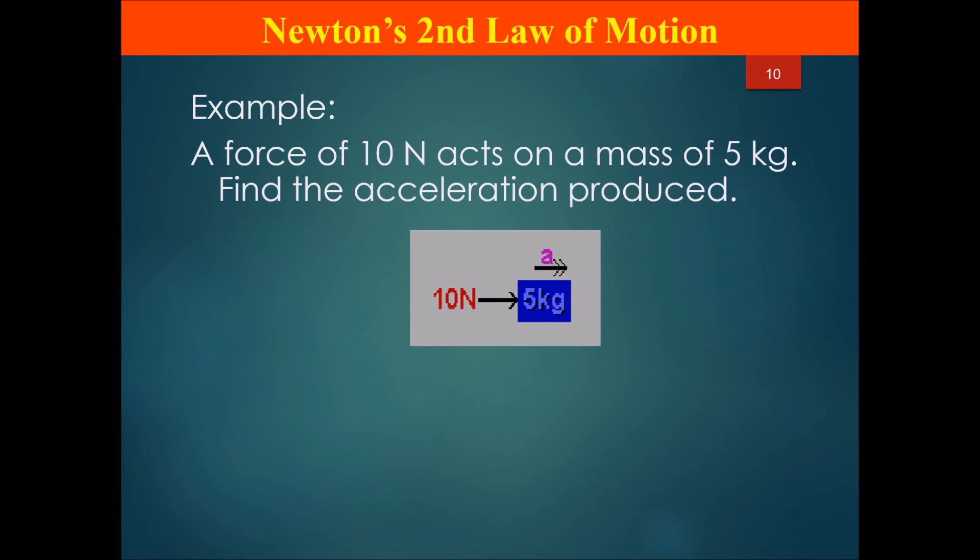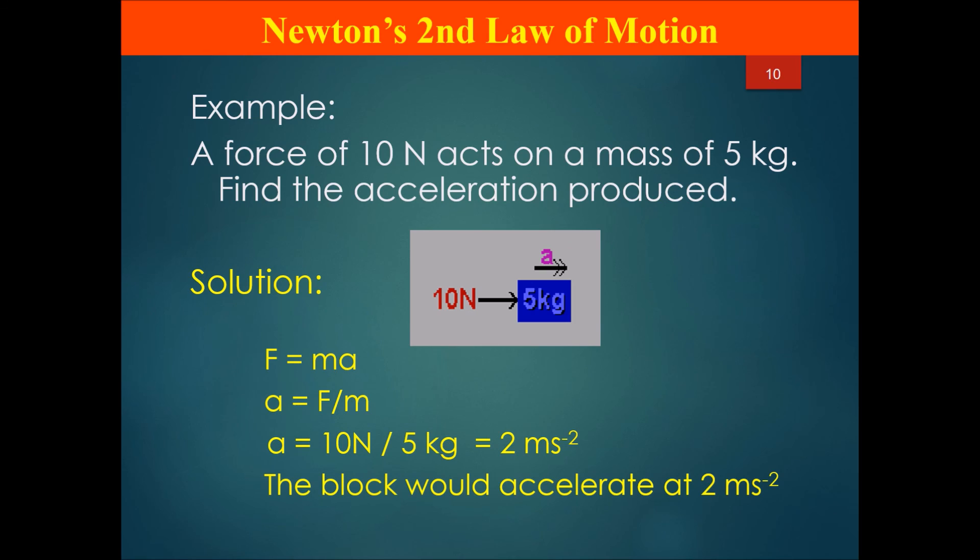Now let's go on. The answer is: F = ma, which can be rearranged to a = F/m. So a = 10 newtons divided by 5 kg, and therefore we can find the acceleration of this block will be 2 meters per second squared.